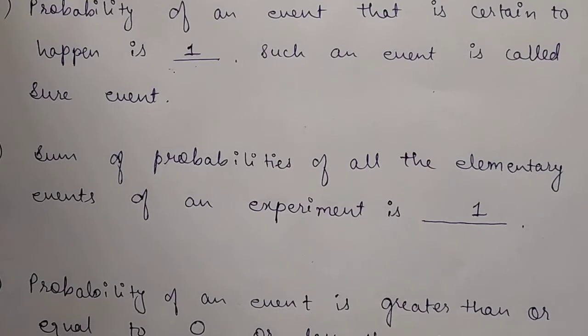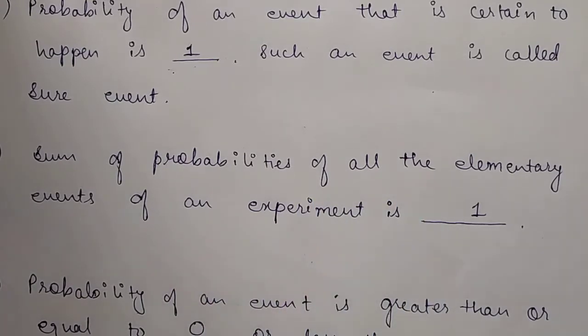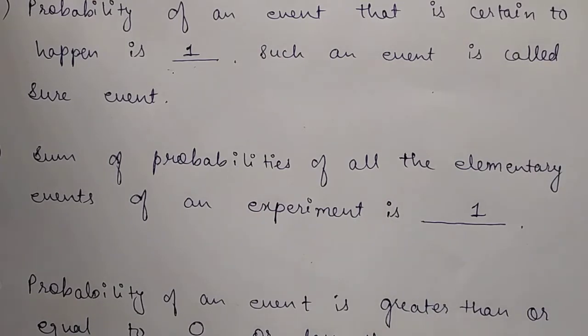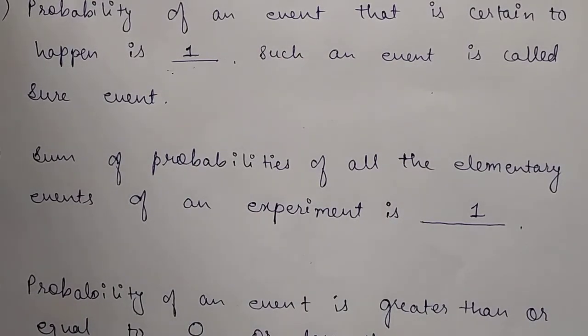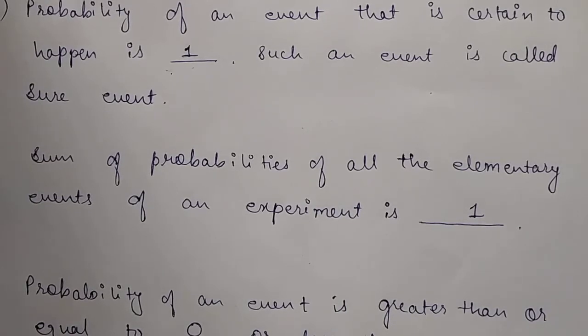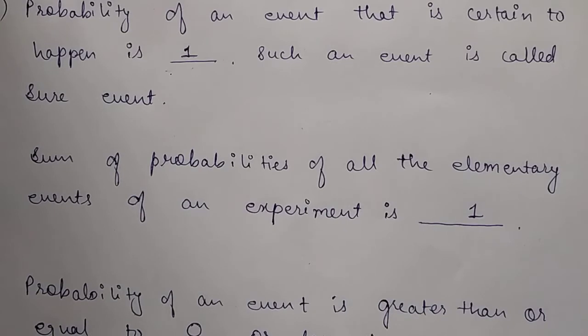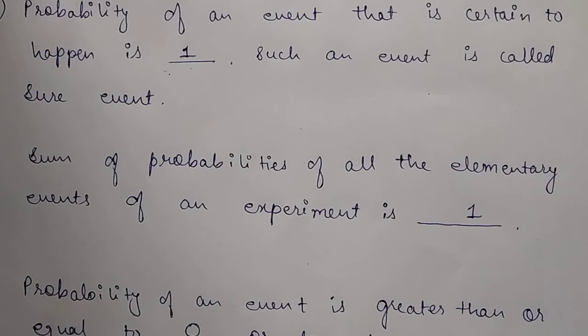Let's move on to the next question. The sum of probabilities of all the elementary events of an experiment is 1. Now how is this? What are elementary events? Elementary events are all those individual events that can happen when we are doing a particular experiment.